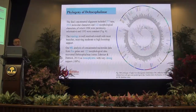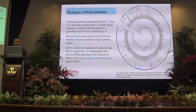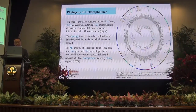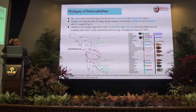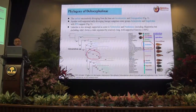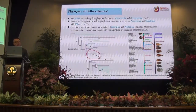Our analysis of concatenated nuclear sequence data from 5 genes and 222 morphological characters recovered Deltocephalinae as monophyletic with very strong support. The tree is divided into several stages. The first is the earliest successively diverging lineage from the base, comprising Acostemmini and Goniagnathini. Another well-supported and early diverging lineage comprises this group, with a long-branch lineage and staggered placement, with 95% support.